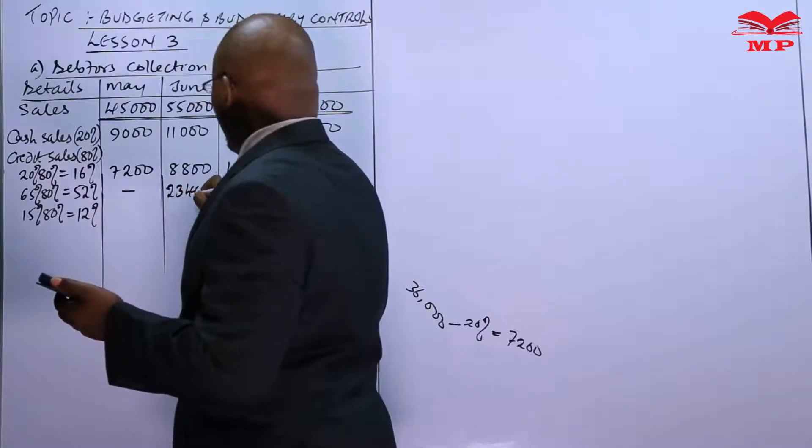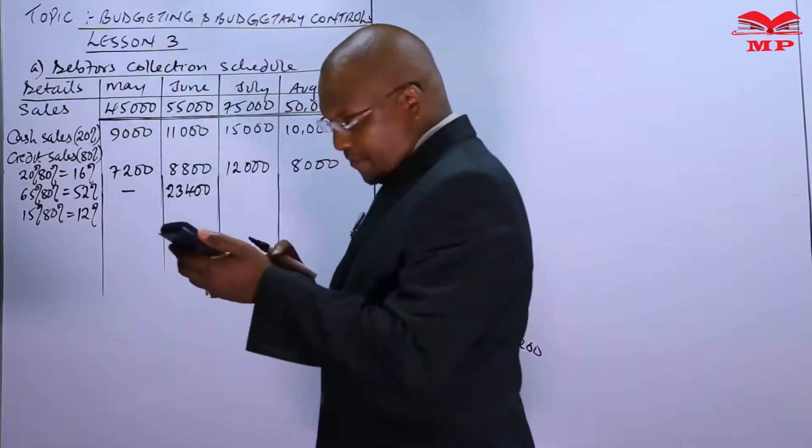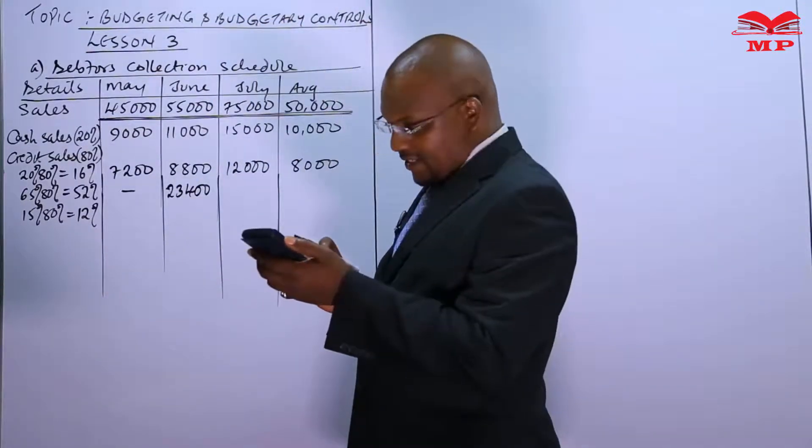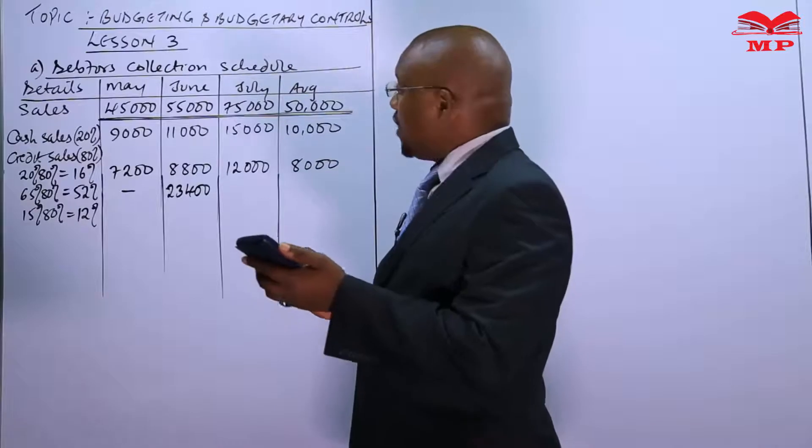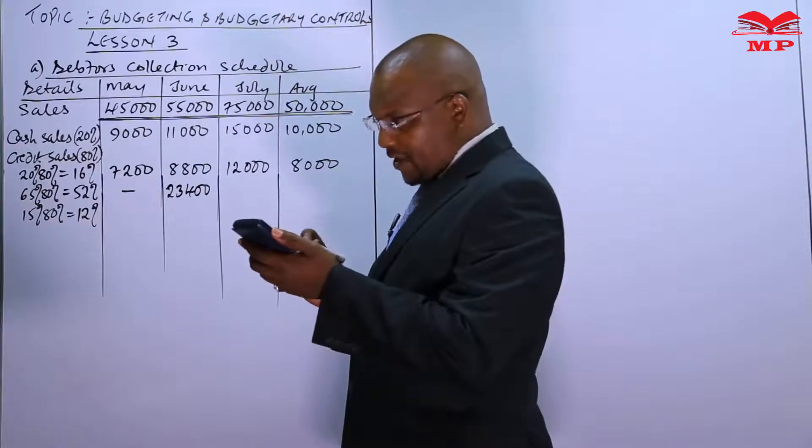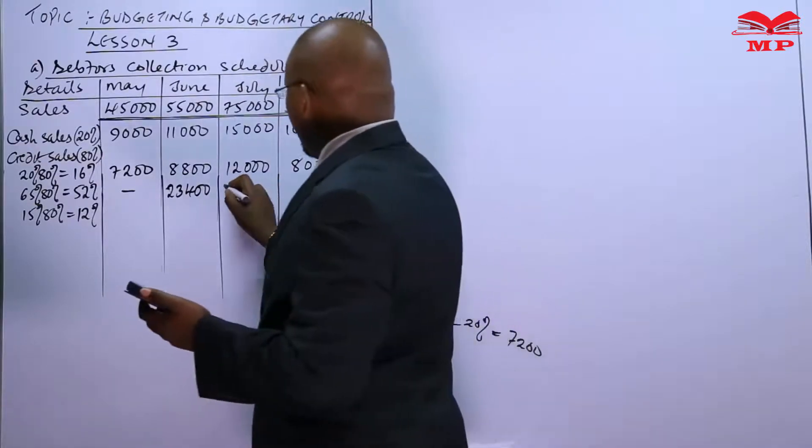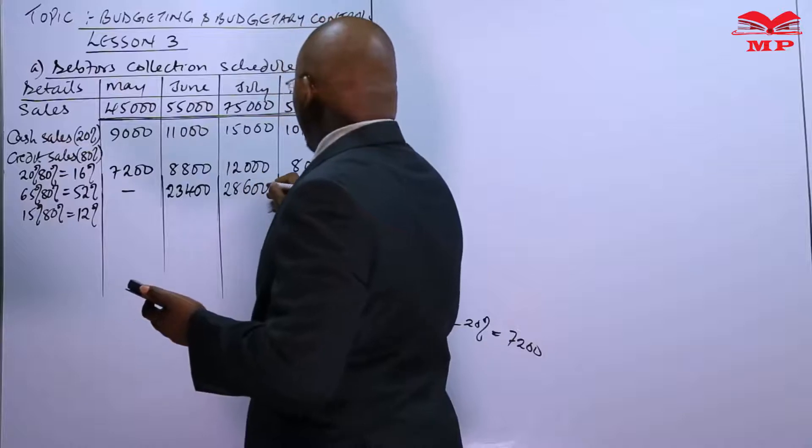Then 0.52 times the sales of June which is 55,000, these to be collected 28,600 in the month of July.